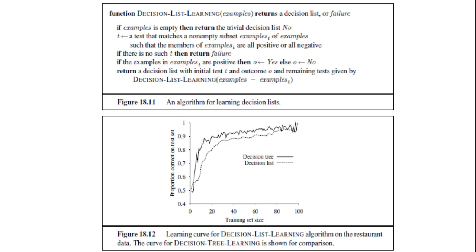The algorithm is shown here. You can see the algorithm for learning decision lists. This algorithm does not specify its method for selecting the next test to add to the decision list. Although the formal results we went over earlier do not depend on the selection method, it makes sense to prefer tests that match the largest sets of uniformly classified examples, so that the overall decision list will be as compact as possible. The simplest strategy is to find the smallest test matching any uniformly classified subset, regardless of the size of the subset. This approach works quite well. You can see a learning curve for the decision list learning algorithm on the restaurant data.